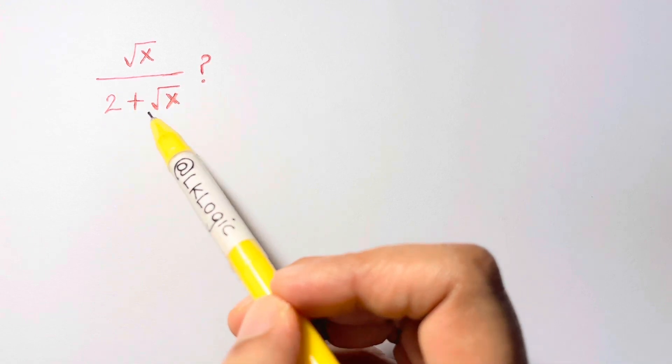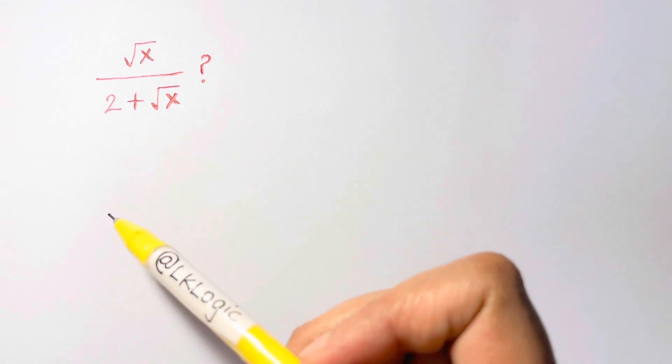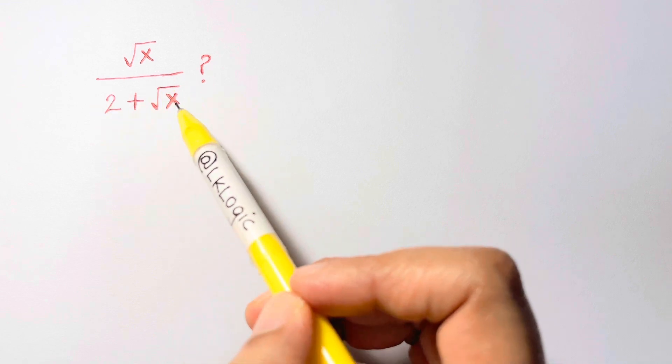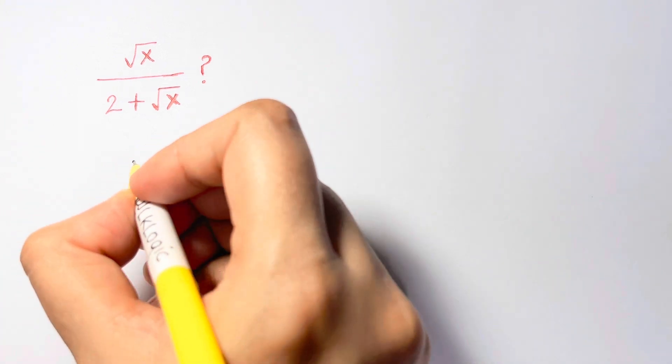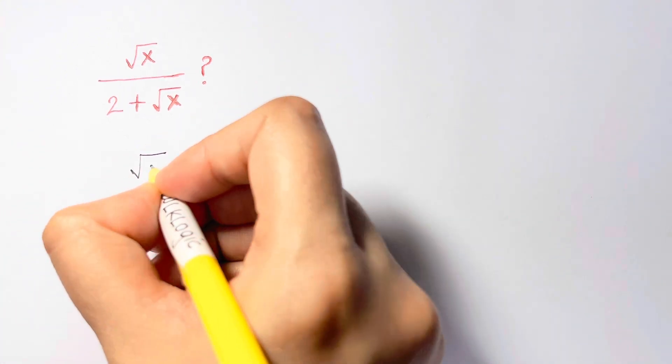Now what do you mean by rationalizing? Just turn it into an identity so that your root gets removed. So let me write it down: we have square root of x over 2 plus square root of x.